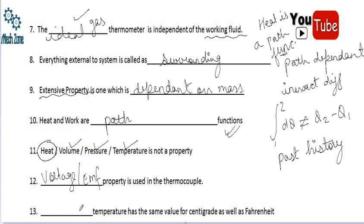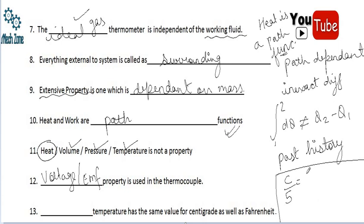Blank temperature has the same value for centigrade as well as for Fahrenheit. Using the formula C/5 = (F − 32)/9 and setting C equal to F, the temperature that has the same value on both scales is minus 40. So −40 is the temperature which has the same value on both the centigrade and Fahrenheit scales.